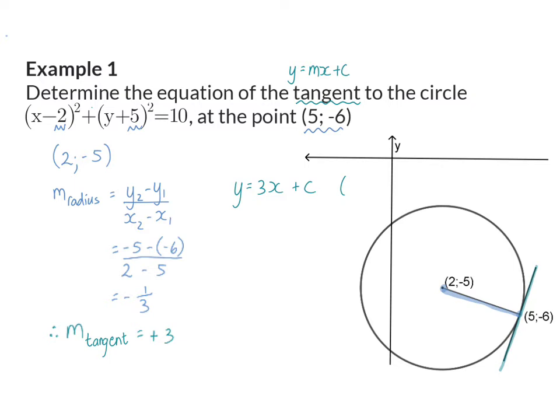For this I'm going to focus on the coordinate that I have on my tangent and substitute that into x and y's place. So my y value becomes -6, my x value becomes 5, and then I can solve for c.